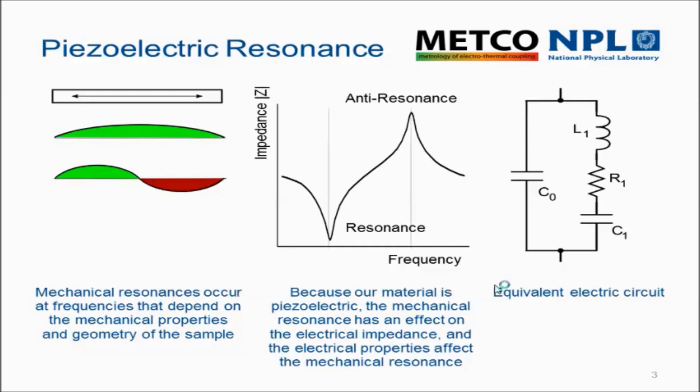Because this is an electrical measurement, it's often convenient to describe this in terms of an equivalent electrical circuit, where C0 is the basic static capacitance of the material or device, the inductance represents the mass or momentum in the material, and there's an additional capacitance which represents the coupling between the two.